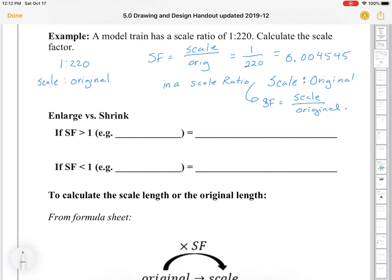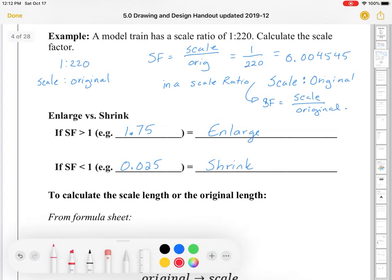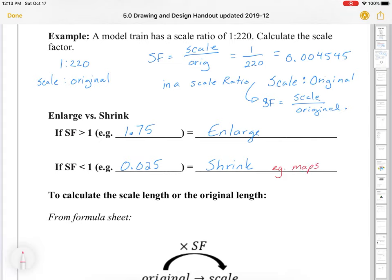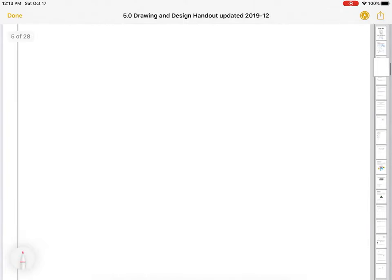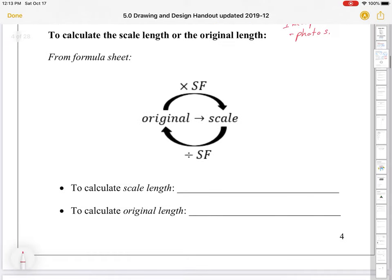Enlarging versus shrinking. If the scale factor is greater than 1, for example 1.75, it's bigger than 1, we're going to enlarge. If it's less than 1, for example 0.025 is less than 1, we're going to shrink. So examples of this might be, as I said, maps, Ikea, pictures. Example of these might be electronic circuits. This might also be photographs. If you take a picture of a mountain, it's hard to put a mountain in your room.